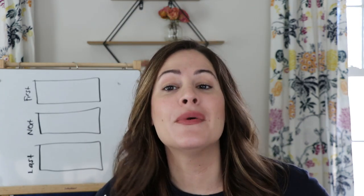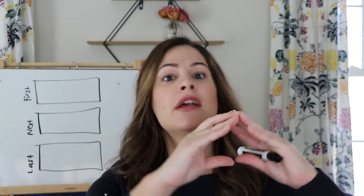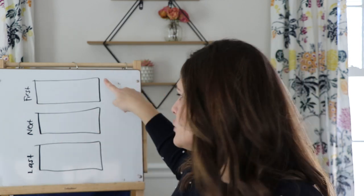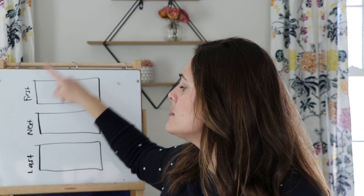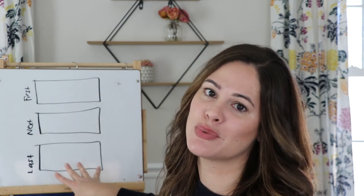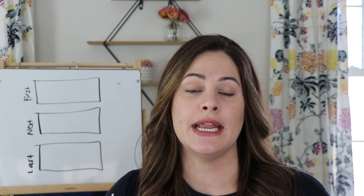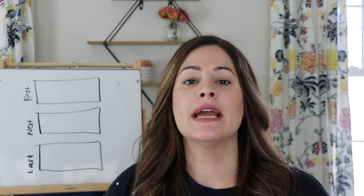Welcome back. Here we're going on to our next step, which is called say and sketch. You already have your idea in the middle of your circle map, and you've brainstormed all sorts of little details on the outside. Now what I want you to do is something called say and sketch. You should have a sheet of paper with three rectangular boxes and the words first, next, and last on it. If your parents weren't able to print it, you can draw three big rectangular boxes on a blank piece of paper. We are going to practice telling our story in order.